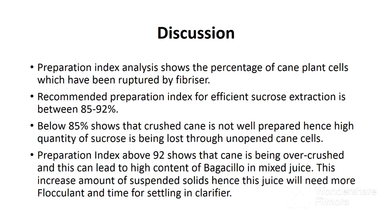Preparation index analysis shows the percentage of cane plant cells which have been ruptured by the fibrizer. It is assumed that the percentage of open cells equals the pole leached out of open cells (hand pole) over the total pole of both opened and unopened cells of prepared cane (rapid pole), times 100. That is why the disintegrator is used for rapid pole — to open the unopened cells.